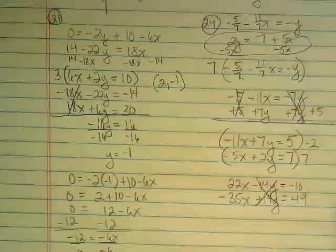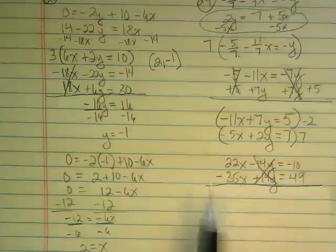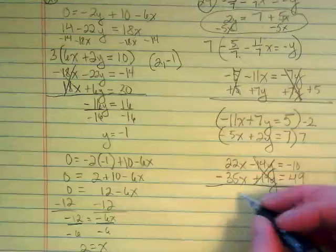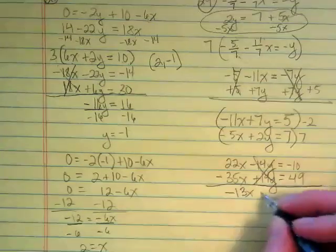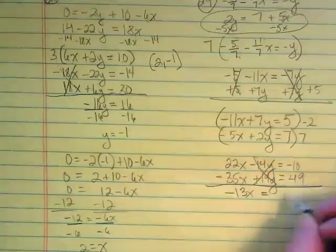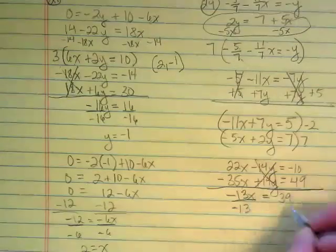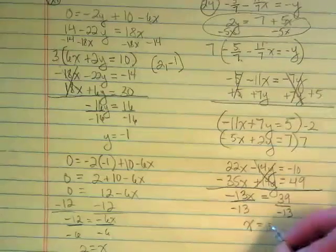That means I can eliminate that term, combine like terms for the other two things. Negative 35 plus 22x would get me negative 13x. Negative 13x equals positive 49 and negative 10 would get me 39. Divided by negative 13, x equals negative 3.